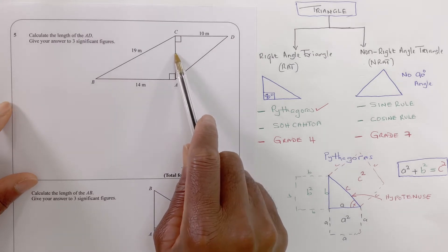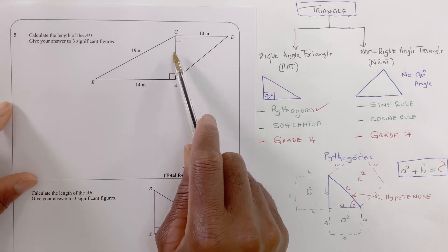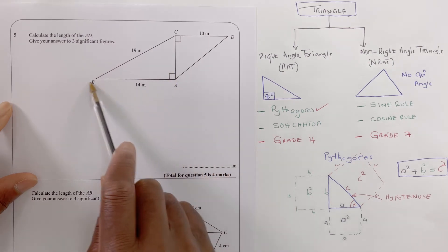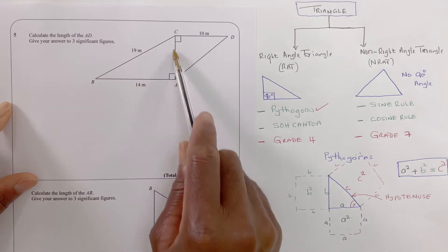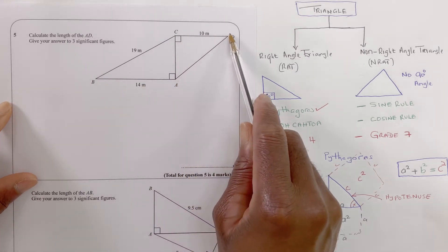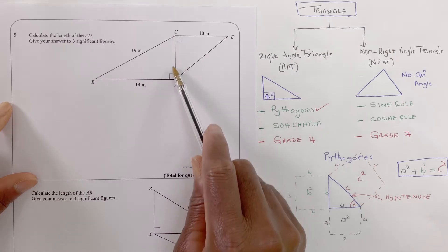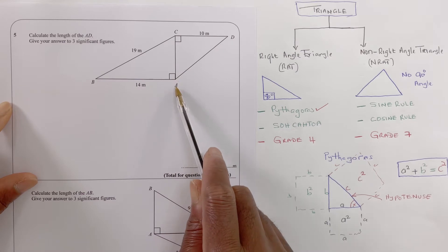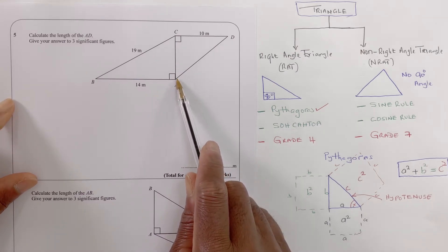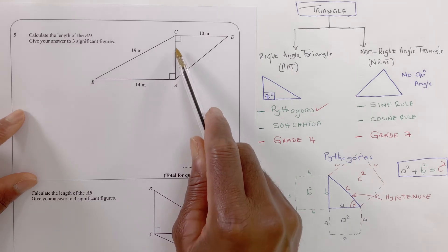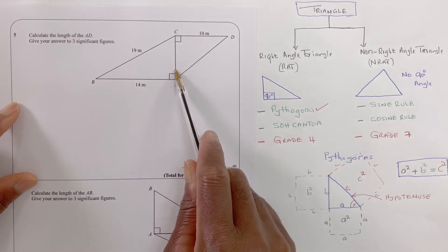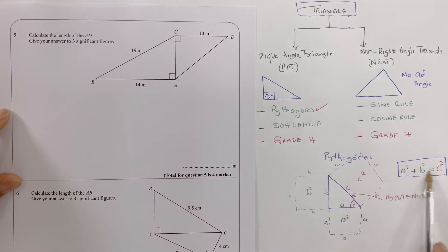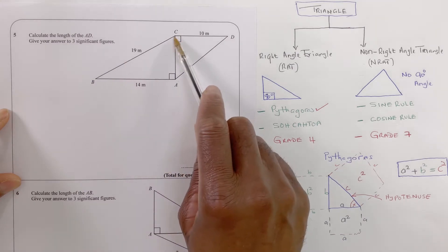First of all I need to find that intermediate side, then I use that side and another side to find the final one. There's a right angle here and another right angle — so it's like two right-angled triangles joined together sharing the same base.